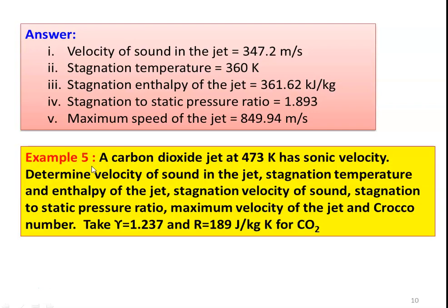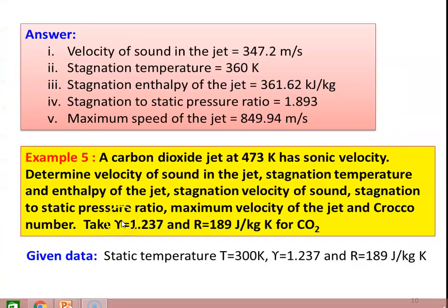Example 5: A carbon dioxide jet at 473 Kelvin has sonic velocity. Determine: velocity of sound in the jet, stagnation temperature and enthalpy, stagnation velocity of sound, stagnation to static pressure ratio, maximum velocity, and Crocco number. For CO₂: γ = 1.237 and R = 189 J/kg·K. Given: T = 473 K, γ = 1.237, R = 189 J/kg·K. For sonic condition M = 1 and C = A.